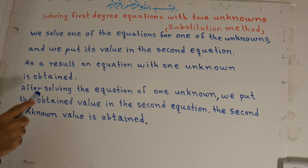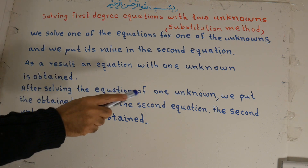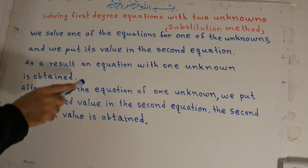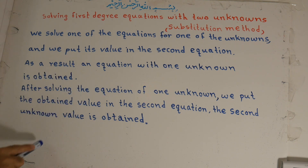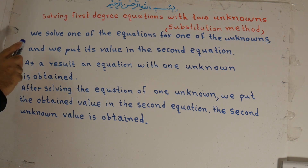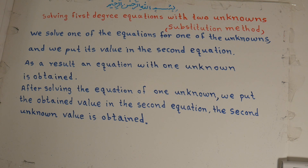After solving the equation of one unknown, we put the obtained value in the second equation. The second unknown value is obtained. To repeat: we solve one of the equations for one of the unknowns and put its value in the second equation. As a result, an equation with one unknown is obtained. After solving that, we put the obtained value in to find the second unknown.